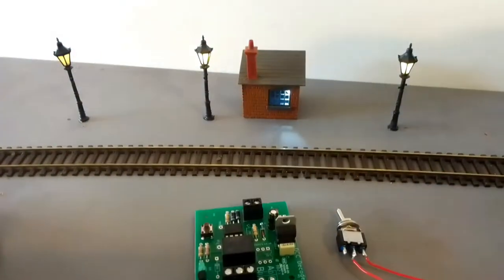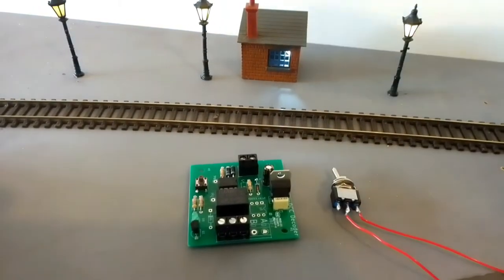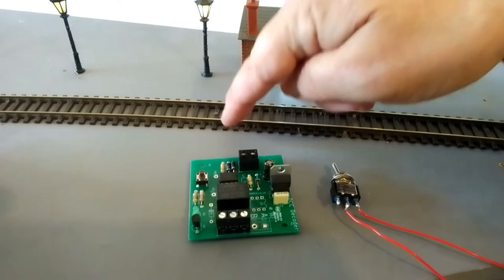This is our DCC decoder board. These three terminals correspond to the three terminals on the switch. These two terminals connect to the track.